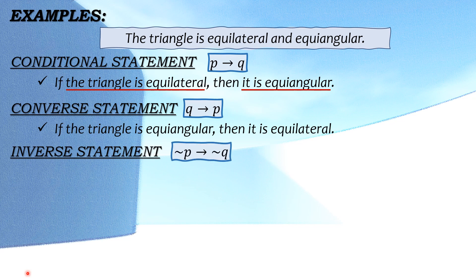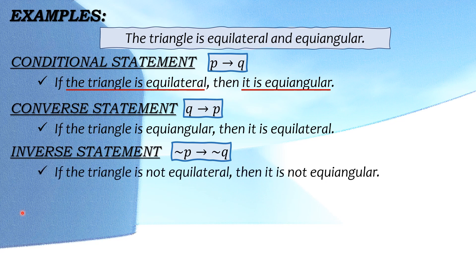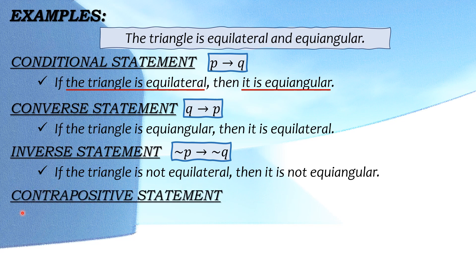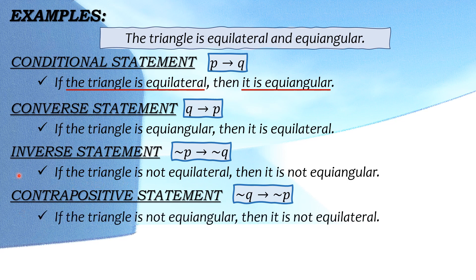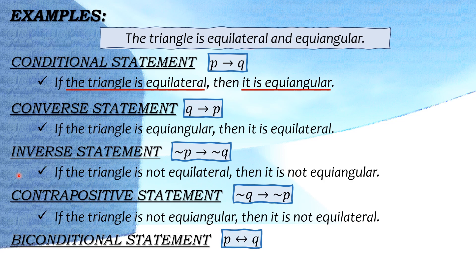Next is inverse statement or negative P, then negative Q. Dito gagawin lang natin negative or inverse ng conditional — maglalagay lang tayo ng word na 'not' or 'no'. So this will become: if the triangle is not equilateral, then it is not equiangular. Next naman is contrapositive statement or if negative Q, then negative P — kabaliktaran naman ito ng inverse statement. So magiging: if the triangle is not equiangular, then it is not equilateral.